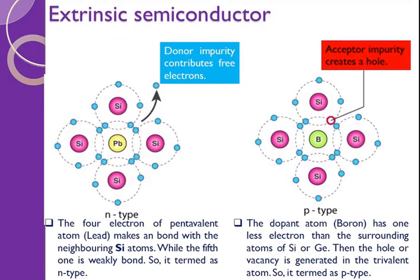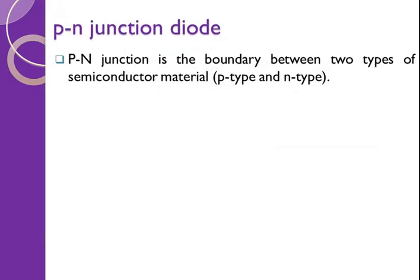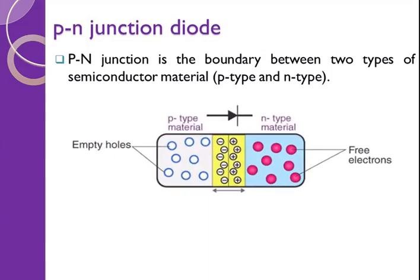Further we will study about the PN junction diode. A PN junction is the boundary between two types of semiconductor material — P-type semiconductor and N-type semiconductor joined together. The N-type side has electrons, and the P-type side has holes.